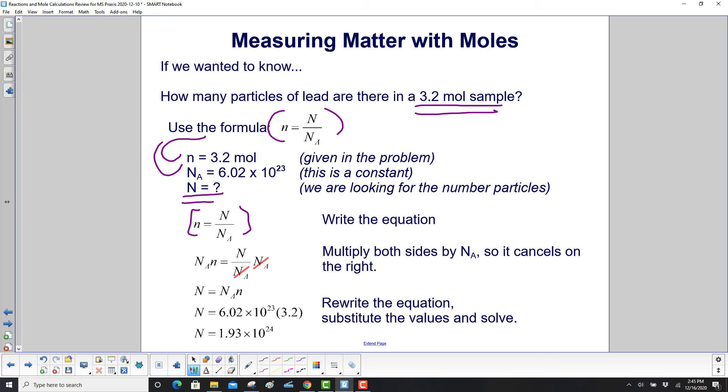And now we need to isolate capital N. So we multiply both sides by N_A, Avogadro's number. So it cancels on the right. And then we just reverse the equation around. So we have the particles equal to Avogadro's number times the number of moles. Substitute in our values, and get a number of 1.93 × 10^24.